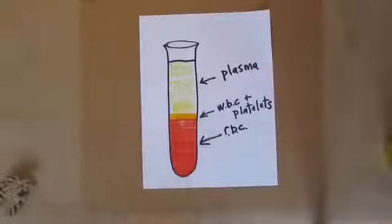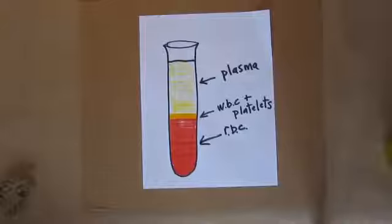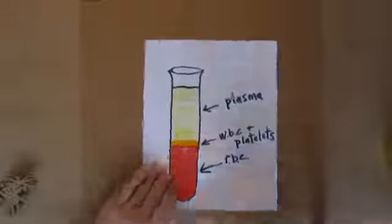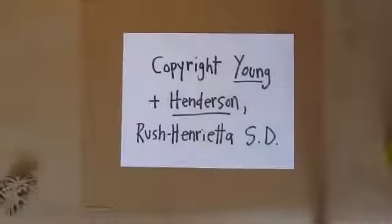They're still very important, but there just aren't as many of them. And those are the four components of blood: plasma, white blood cells, platelets, and red blood cells. And this has been the mini lesson on the four components of blood.